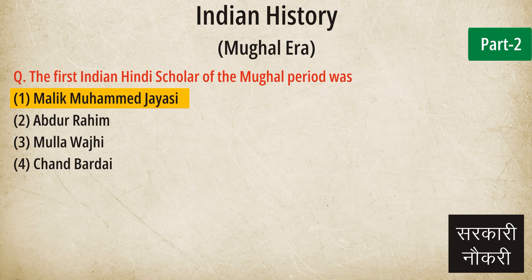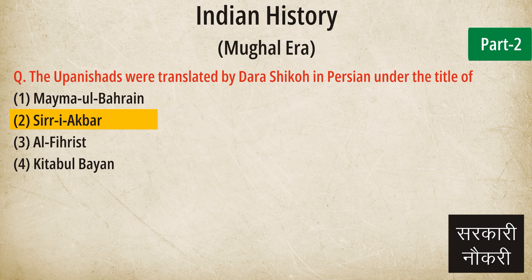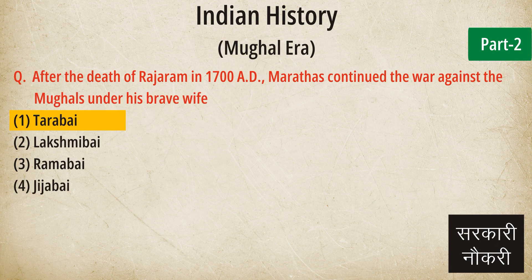Question: The first Indian Hindi scholar of the Mughal period was. Answer: Malik Muhammad Jayasi. Question: The Upanishads were translated by Dara Shikoh in Persian under the title of. Answer: Sirr-e-Akbar. Question: After the death of Raja Ram in 1700 AD, Marathas continued the war against the Mughals under his brave wife. Answer: Tarabai.